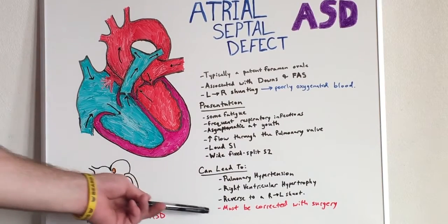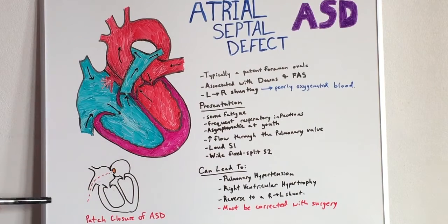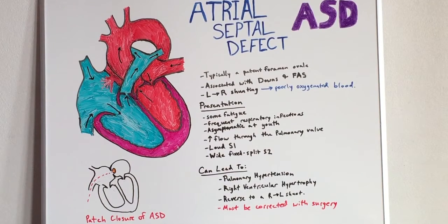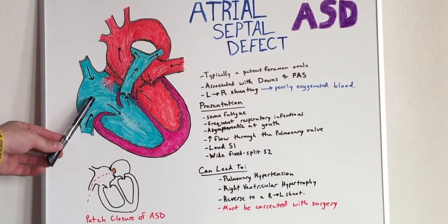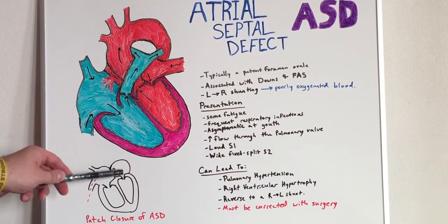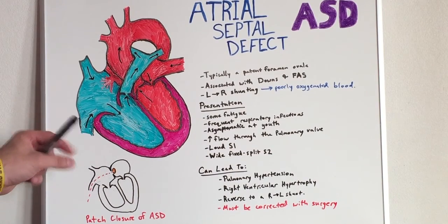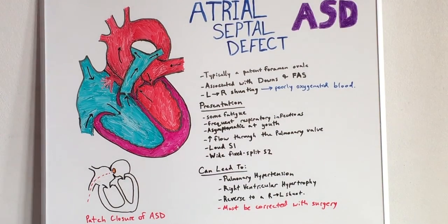This must be corrected with surgery, typically performed via patch closure of the atrial septal defect, as shown in the diagram. In a patch closure, a small catheter is placed in the femoral vein and guided up through the inferior vena cava from the right atrium into the left atrium. A small disc, shown here in orange, is then inflated and pulled back to close the septal defect.